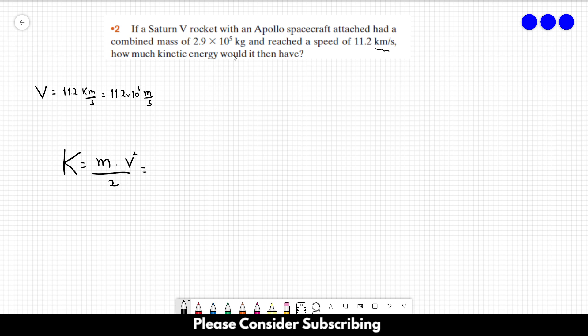The mass of the rocket, we know, it is 2.9 times 10 to the fifth multiplied by the speed, 11.2 times 10 to the third. Don't forget to square the speed and divide everything by 2.